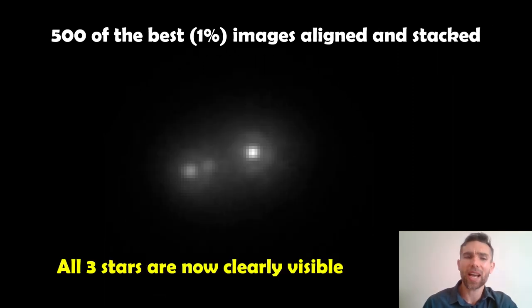And then if you go all the way down to 1% of the best images, so 500 of those 50,000 original ones taken, you can quite clearly see those three stars now. So this particular technique can be good for getting that really good angular resolution in spite of the pretty bad atmospheric turbulence that you get.